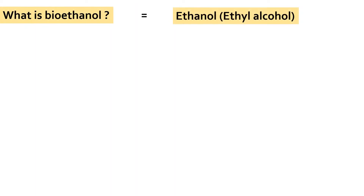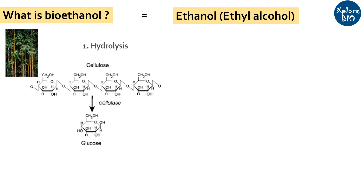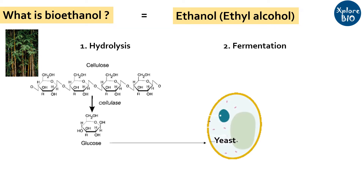Bioethanol is actually ethanol. The cellulose-rich biomass obtained from plants or agricultural waste is first hydrolyzed into soluble sugars such as glucose, which is later fermented by microbes like yeast to produce ethanol, which is termed as bioethanol.